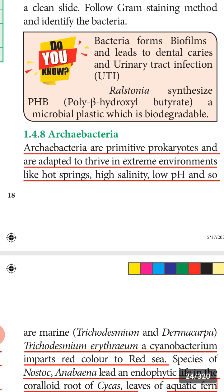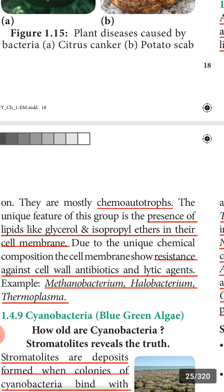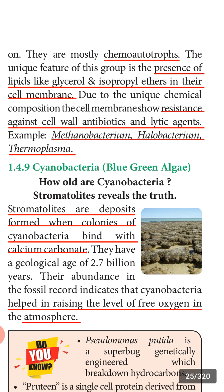In today's topic we are going to study about other prokaryotic organisms. The first one is archaebacteria. The word 'archae' actually means ancient or primitive. These bacteria are said to be the primitive organisms. They are prokaryotes — they do not have a well-developed nucleus bounded by a nuclear membrane. They are adapted to thrive in extreme environmental conditions like hot springs, high salinity, and low pH.